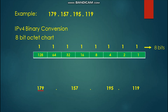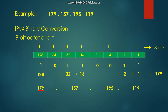Let us solve for 179 to convert it into binary form. We place binary 1 to 128, binary 1 to add 32, binary 1 to add 16, binary 1 to add 2, and binary 1 to add 1. These numbers when added give us a total of 179. All numbers not included in the addition will have a binary 0 assignment. The binary equivalent of 179 is 1-0-1-1-0-0-1-1.